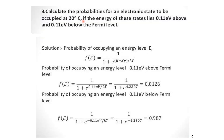Here is a numerical: calculate the probability of an electronic state being occupied at 20 degrees centigrade if the energy state lies 0.11 eV above and 0.11 eV below the Fermi level. First we convert the temperature to Kelvin and then use the Fermi distribution function F(E) = 1 / (1 + e^((E − E_F) / kT)).